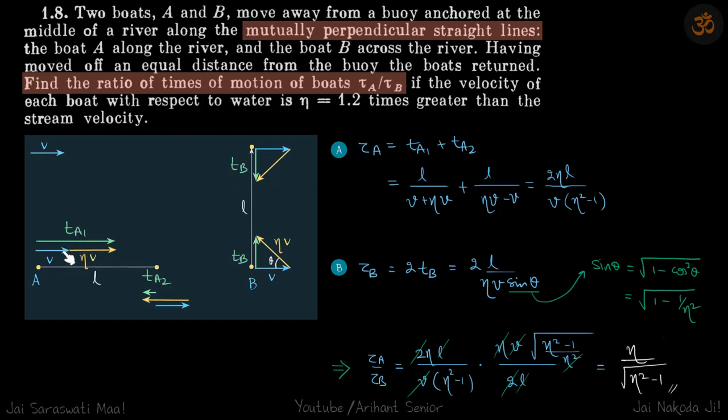So let's say this blue arrow represents the velocity of river and the velocity of boat with respect to river is given as eta v.